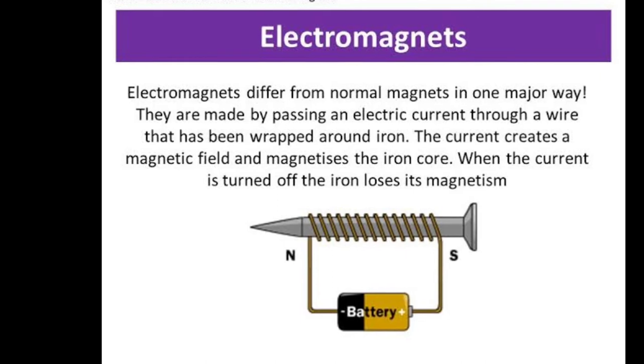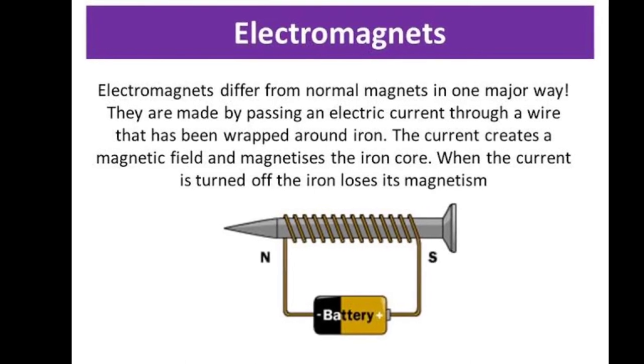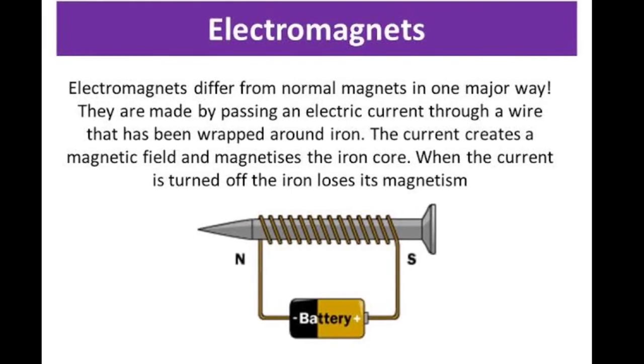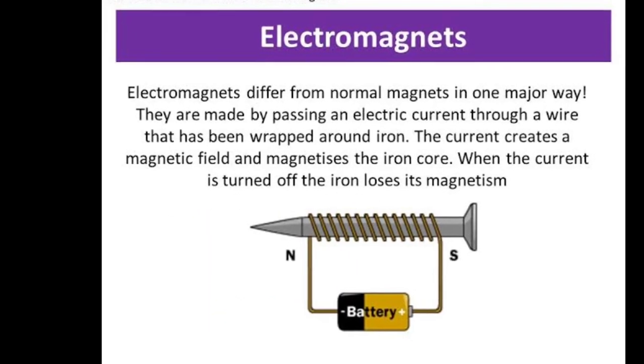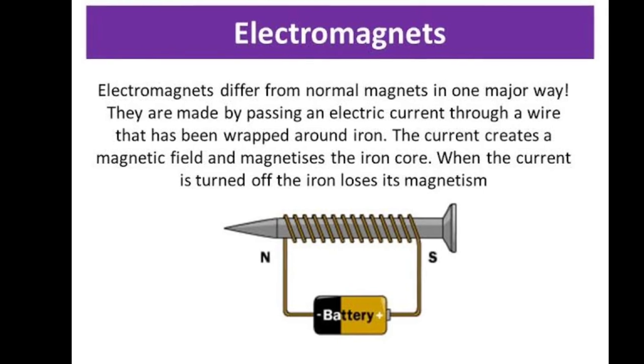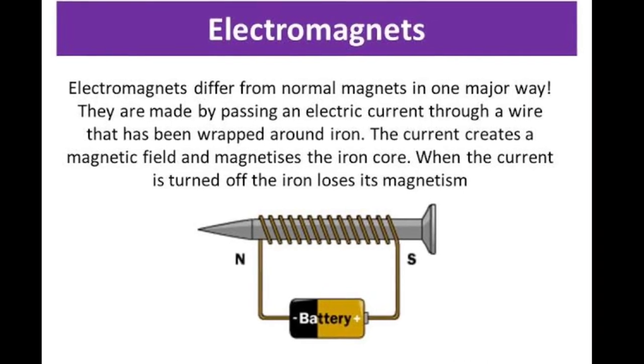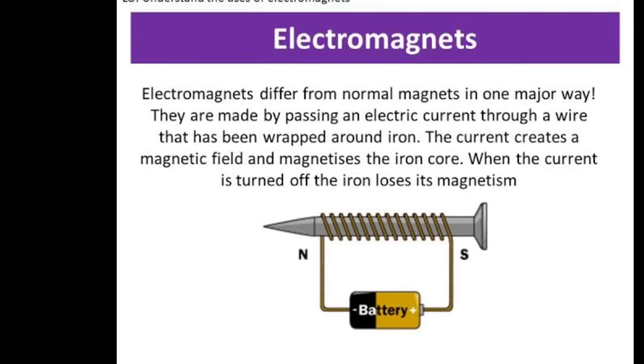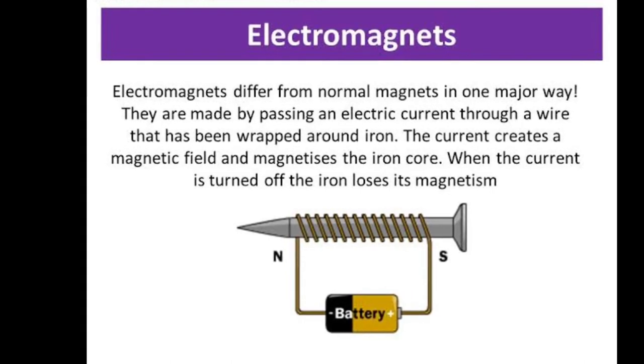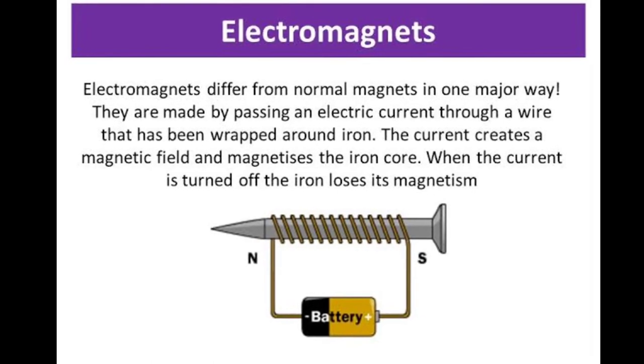Electromagnets differ from normal magnets in one major way. They are made by passing an electric current through a wire that has been wrapped around iron. The current creates a magnetic field and magnetizes the iron core. When the current is turned off, the iron loses its magnetism.